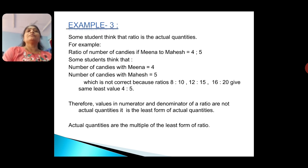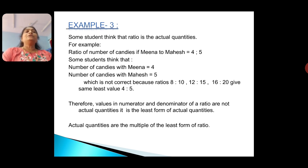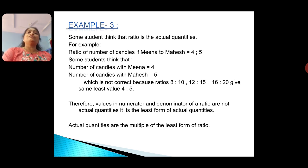Example 3: Some students think that ratio represents the actual quantities. For example, if ratio of candies of Meena to Mahesh is 4 ratio 5, some students think Meena has 4 candies and Mahesh has 5, which is not correct. Because ratios 8 ratio 10, 12 ratio 15, and 16 ratio 20 also give the same least value 4 ratio 5. Therefore, the values in a ratio are not actual values — they are the least form. Actual quantities are multiples of the least form of the ratio.